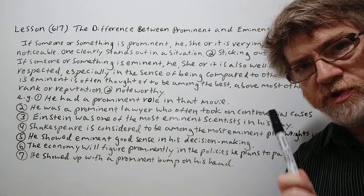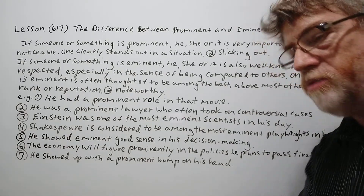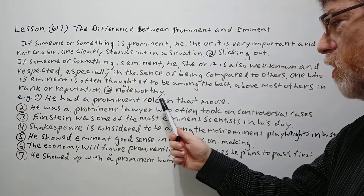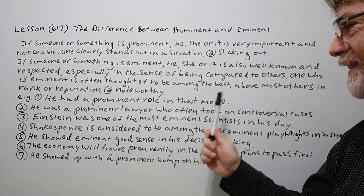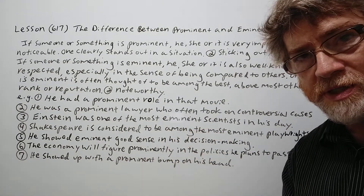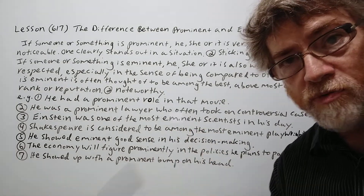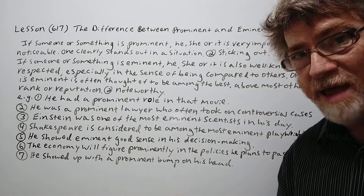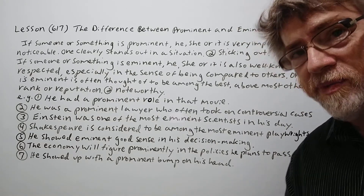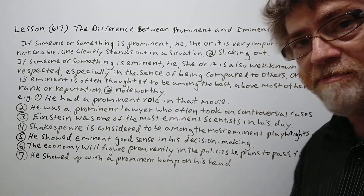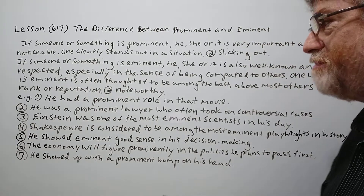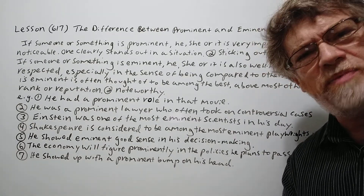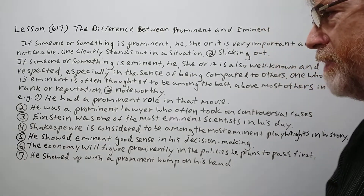We have seven examples to show just how it's used. Here's the first one: he had a prominent role in that movie. So here it means it was an important role, a sticking-out role. Was it an eminent role — an admired role, among the best that ever existed? No, probably not. That's not what you're saying.